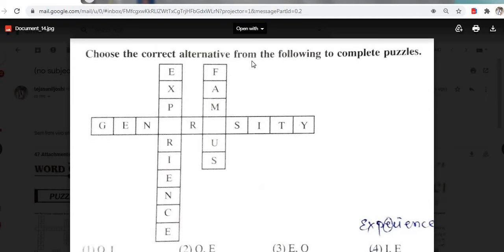Choose the correct alternative from the following to complete puzzles. F-R-E-G-H-T-F-U-L. Frightful. G-L-I. Glitter. G-H. Option number second is the correct option.